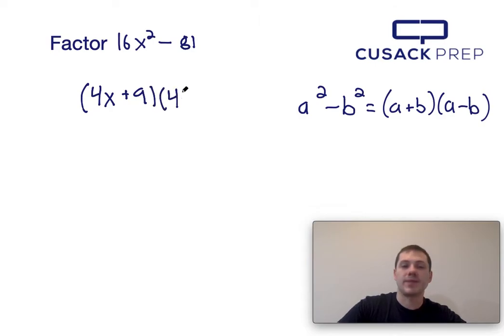Essentially what I'm doing here is since I recognize this is the difference of squares, I take the square root of the first term, which is 4x in this case, and I add it to the square root of the second term, which is 9 in this case, and then I do the same thing but I just change the sign to subtraction.